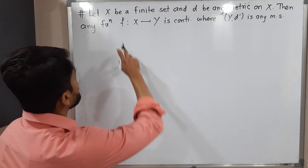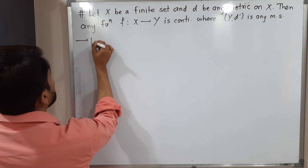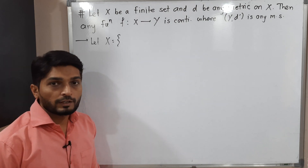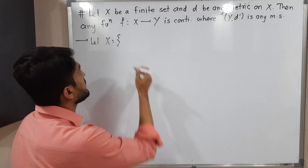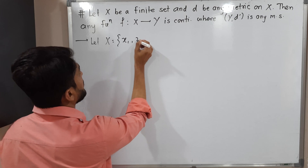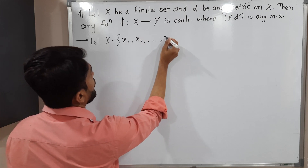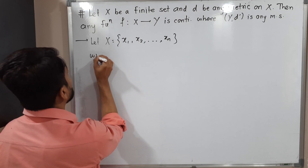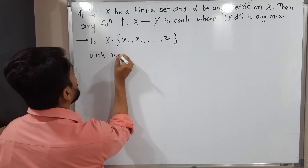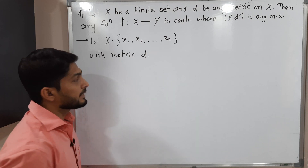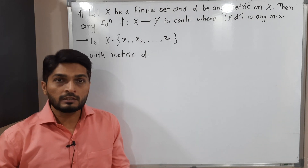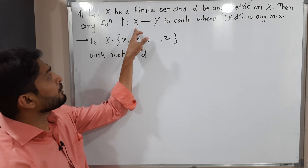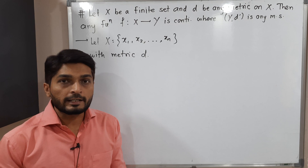The important information is that metric space X is a finite set. So let us consider X has a finite number of elements — n elements. So X will be like {x1, x2, ..., xn}, with n elements and metric d. This is the metric space (X, d) which is a finite metric space. We have to prove that any function f defined from X to Y is definitely a continuous function.